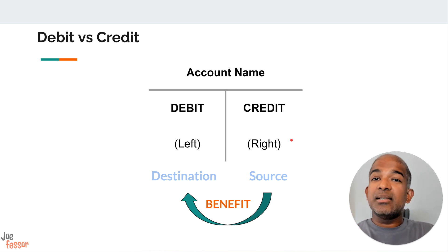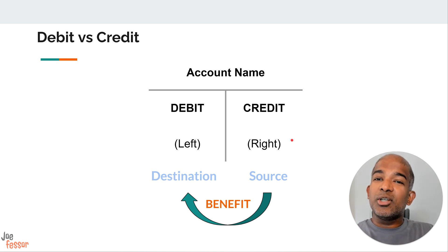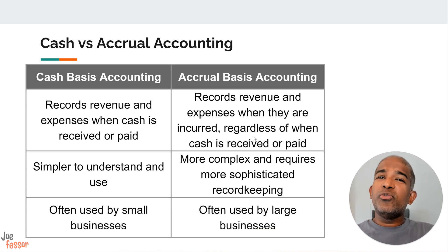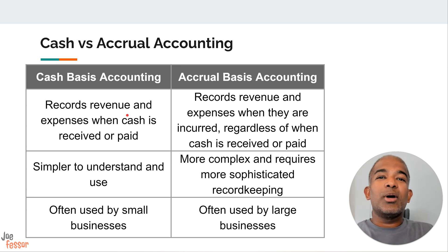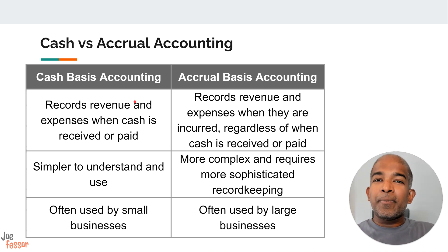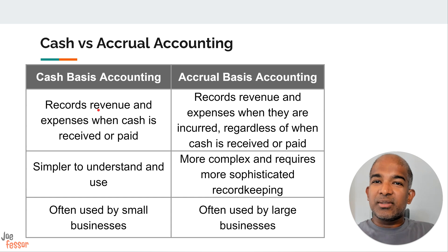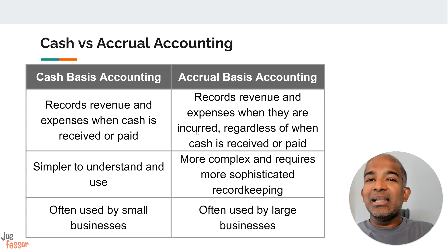If you want to explore debits and credits in more detail with plenty of examples, be sure to check out my comprehensive video on this topic — you'll find the link in the description below. Alright, let's talk about two fundamental accounting methods — cash basis accounting and accrual basis accounting. These methods determine when transactions are recorded in the books and can significantly impact how a company's financial picture looks. In cash basis accounting, it's all about cash. Revenue is recognized only when cash is received and expenses are recognized only when cash is paid out.